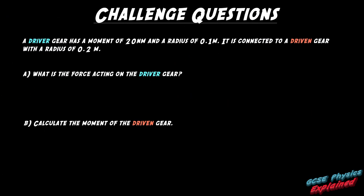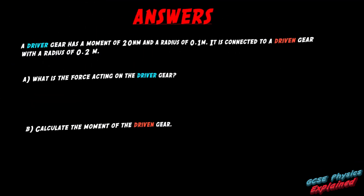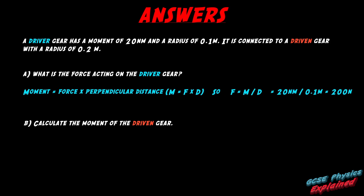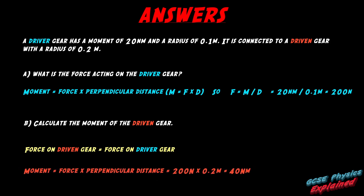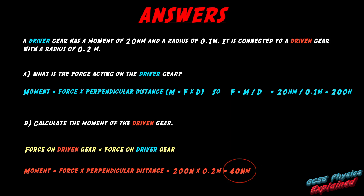Here's some challenge questions — pause the video and give them a try. And here's the answers: the moment is the force times by perpendicular distance, so F equals M divided by D if we rearrange the equation. That's 20 newton meters divided by 0.1 meters equals 200 newtons. The force on the driven gear is always equal to the force on the driver gear, so the moment equals 200 newtons times by 0.2 meters, giving a moment of 40 newton meters. The moment is twice as big on the driven gear compared to the driver gear.